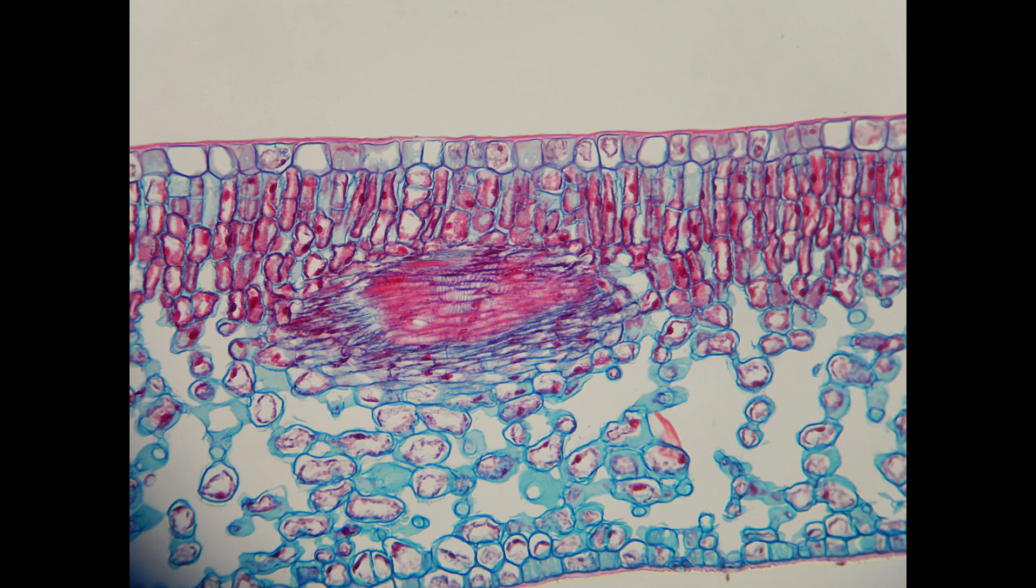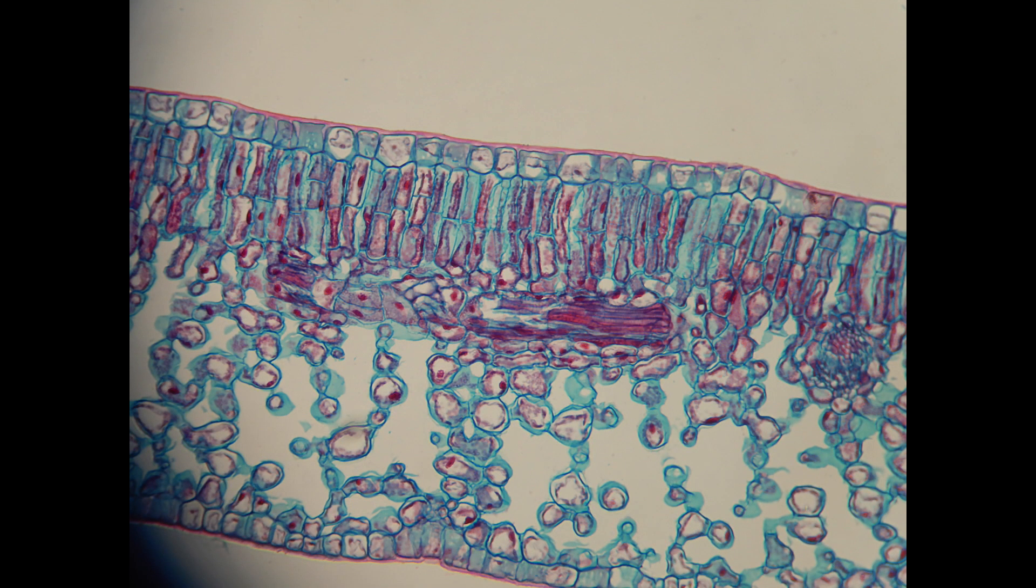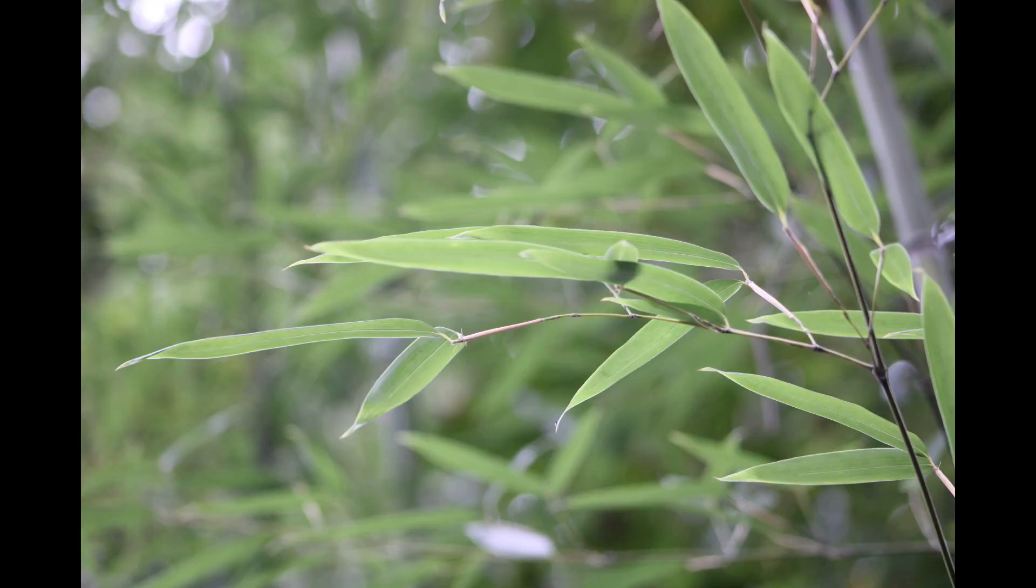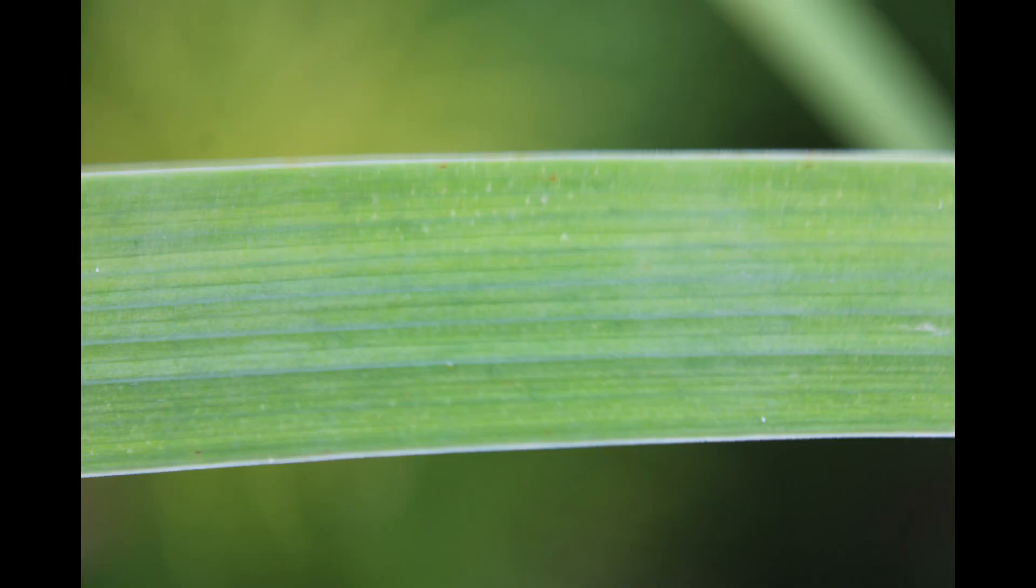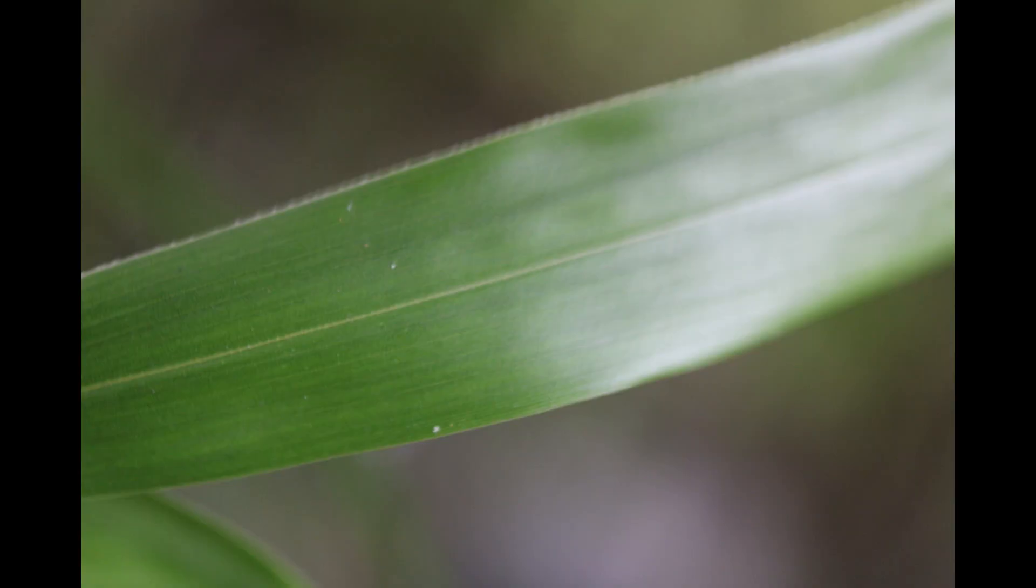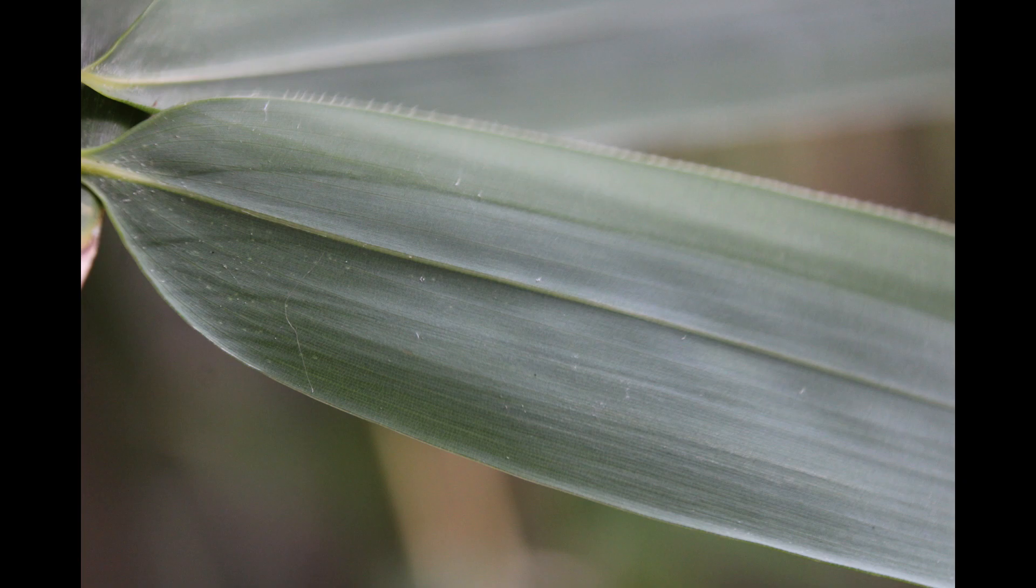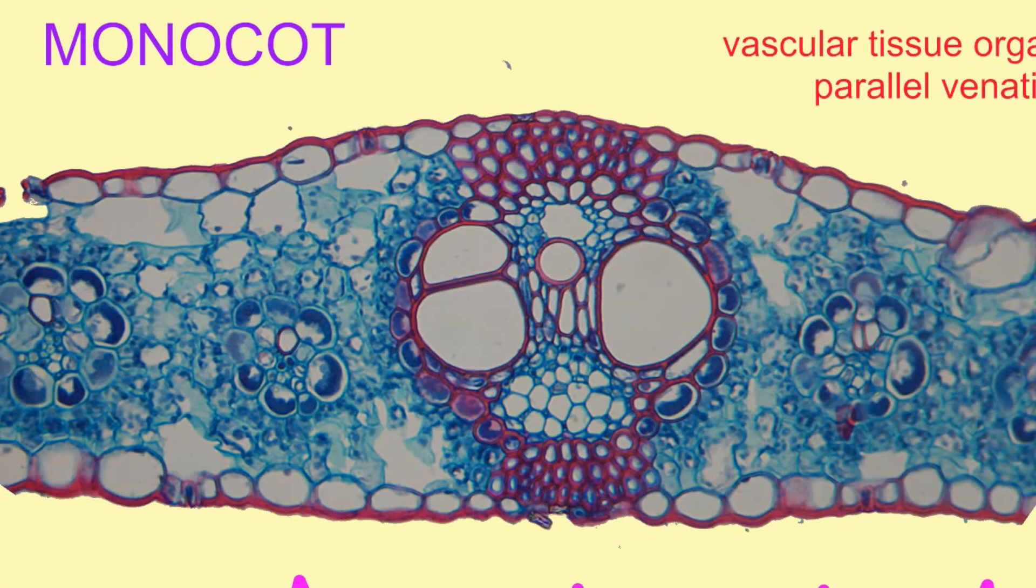In contrast, in monocots such as orchids or grasses—plants which often have long leaves—the veins tend to run in parallel along the leaf and not converge.